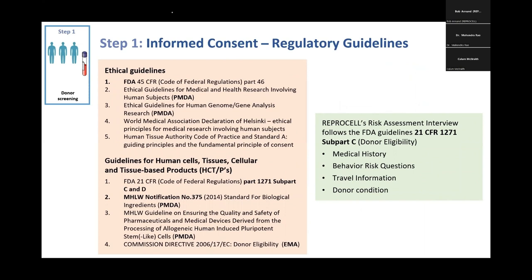The next step is making sure you have followed appropriate ethical guidelines on human subjects, meaning donors must be informed that there will be commercial use of the tissue sample collected. You always have to ask specific questions — medical history, risk questions, travel information, donor condition — and there must be a risk assessment interview. The travel information is particularly important because of the risk of mad cow disease (TSE) for subjects who traveled to certain regions prior to 2010, and there is still no test for TSE.